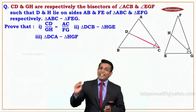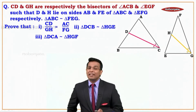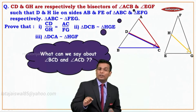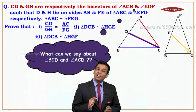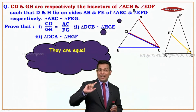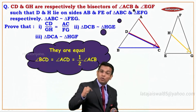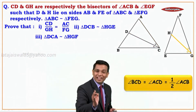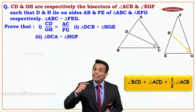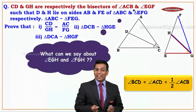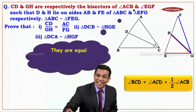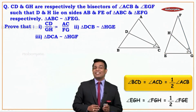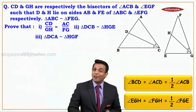Let's see what is given. CD and GH are respectively the bisectors of angle ACB and angle EGF. Since CD is a bisector, angle BCD equals angle ACD, and each is half of angle ACB. Same way, since GH is a bisector, angle EGH equals angle FGH, and each is half of angle FGE.